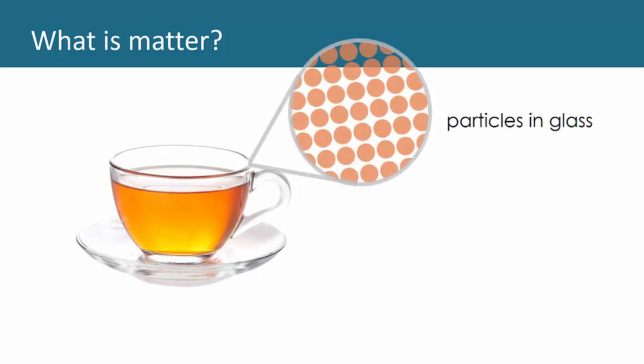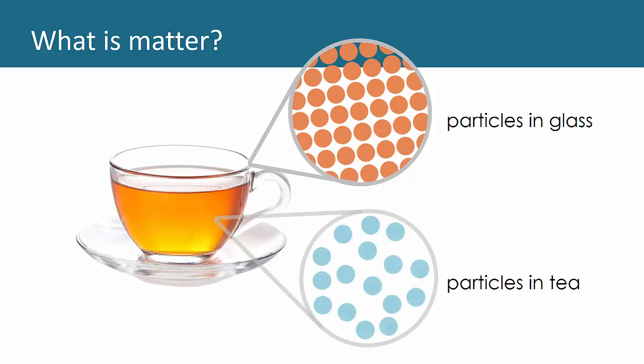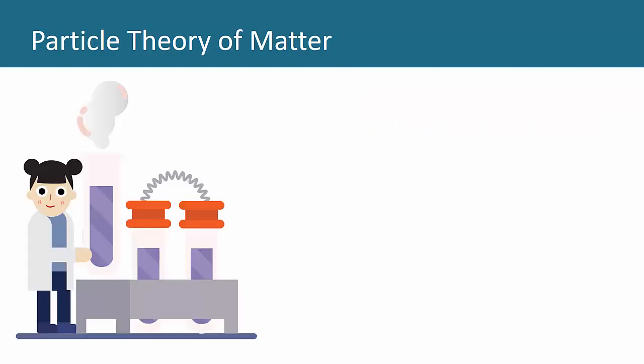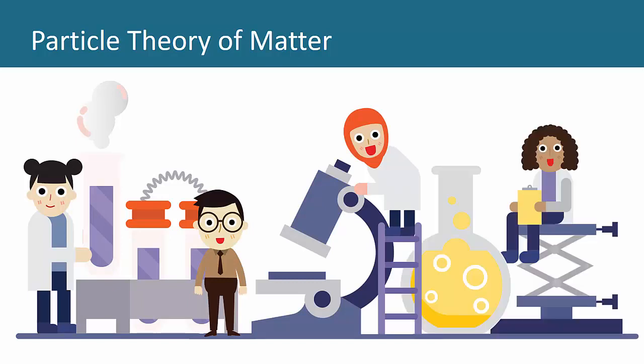This teacup and the tea in the cup are made of matter. The teacup is solid and made of tightly packed particles. Notice how the particles in the tea, which is liquid, have more space between them. More on this in the next lesson.